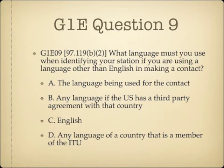Question 9. What language must you use when identifying your station if you are using a language other than English in making a contact? A, the language being used for the contact; B, any language if the US has a third party agreement with that country; C, English; or D, any language of a country that is a member of the ITU.